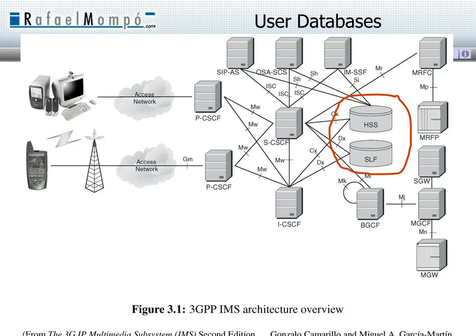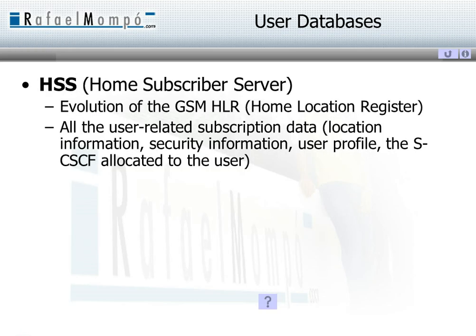The first element is user databases, circled in red in the figure. There are two user databases. The HSS is the home subscriber server, which contains all the user-related subscription data. It is the master database regarding user information.